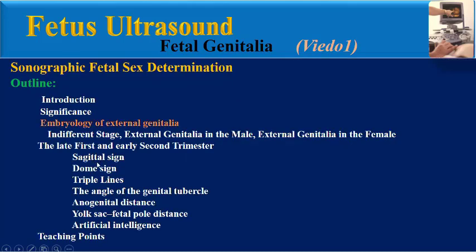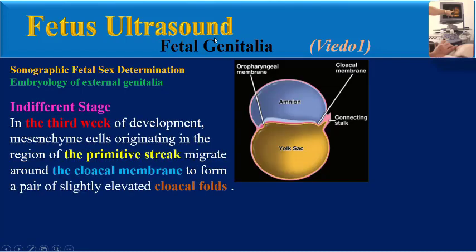Embryology of external genitalia in different stages and in male and female: Understanding how external genitalia develops helps to better interpret ultrasound images for fetal sex determination and to understand congenital genital anomalies. This is a diagram of an embryo at the end of the third week of development, showing a trilaminar embryo — the primitive streak — with ectoderm facing the amnion, endoderm facing the yolk sac, and mesoderm in the middle. On both ends, the mesoderm is deficient and endoderm and ectoderm are in direct contact, creating the oropharyngeal membrane cranially and the cloacal membrane caudally.